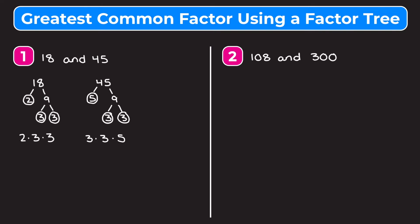Now to use the prime factorization to find the greatest common factor, we want to see which prime factors overlap — which prime factors do 18 and 45 have in common? They both have two threes, so we're going to circle the prime factors they have in common. That means our greatest common factor, or GCF, is going to be those two threes multiplied together: three times three equals nine. So the greatest common factor between 18 and 45 is nine.